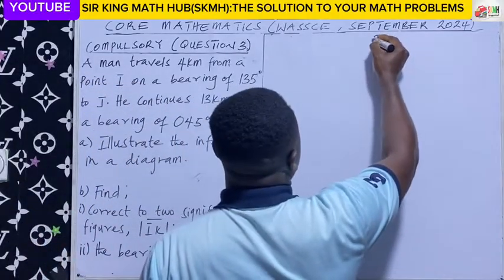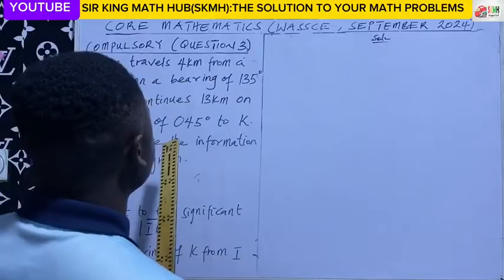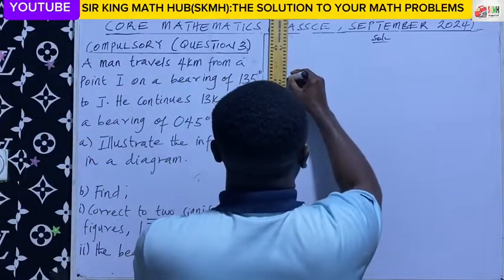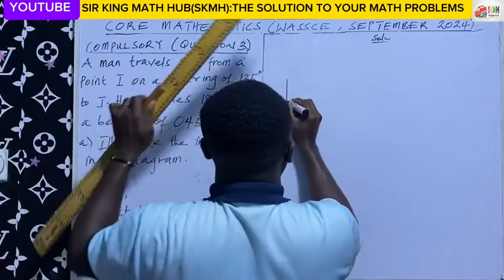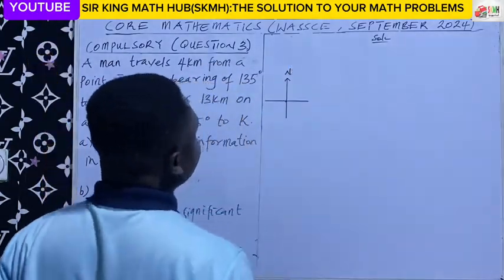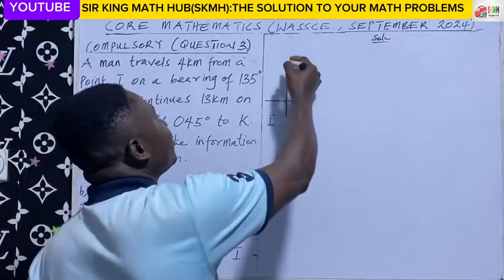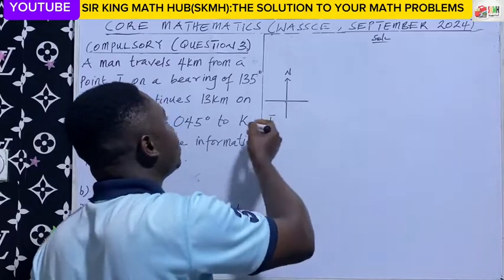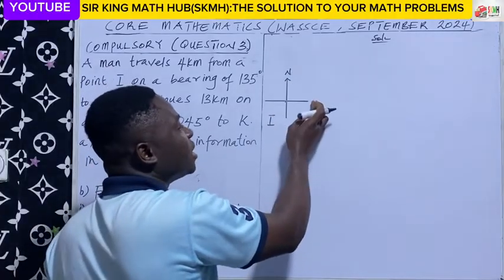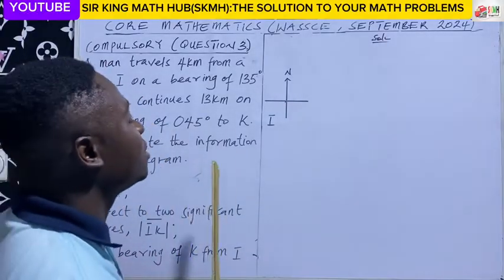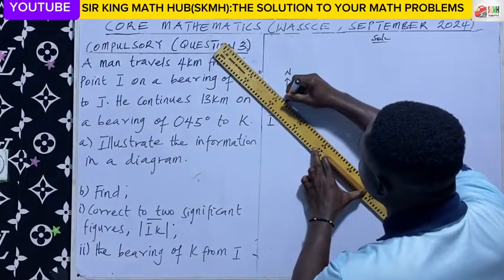So let's quickly represent the first statement in the diagram. The man travels 4km from point I on a bearing of 135 degrees to J. So we have our point I and our geographical north. In bearing, angles are measured from the geographical north in the clockwise direction, so we have to measure 135 degrees. From north to east is 90 degrees, so 90 degrees plus 45 degrees gives us 135 degrees. So we need to measure 45 degrees from this quadrant.